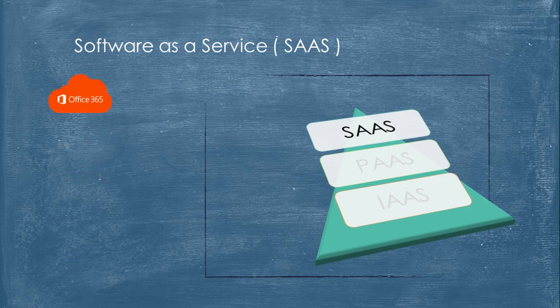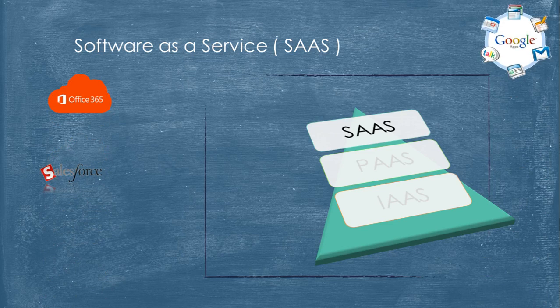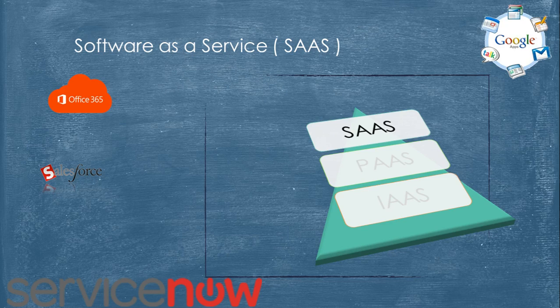Software as a Service is when you access an application with a browser. Examples are Office 365, Salesforce, ServiceNow, and Google. These are totally based on software licenses and a delivery model. These applications are centrally hosted with their respective cloud providers. Google hosts Gmail, Google Talk, Google Groups, and an entire suite of Google applications.